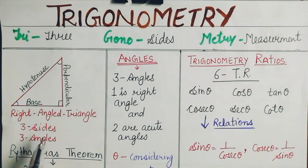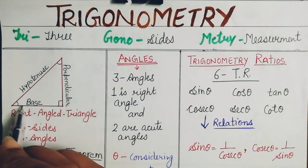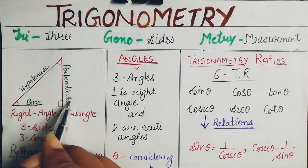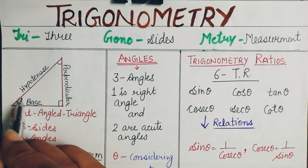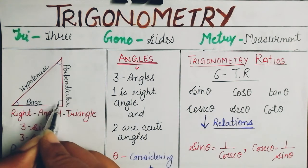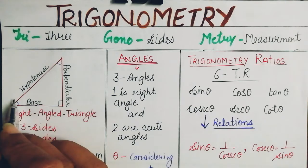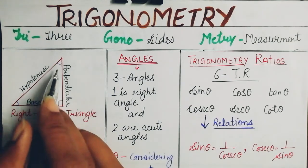The three sides of a right angle triangle are: base, perpendicular, and hypotenuse. You know that the angle sum property is 180 degrees.